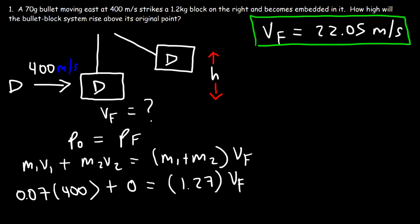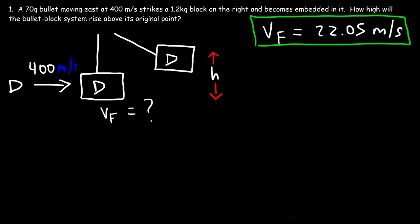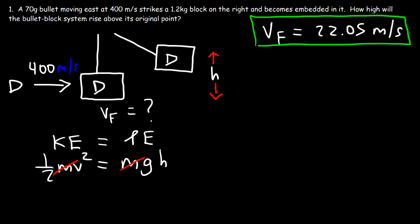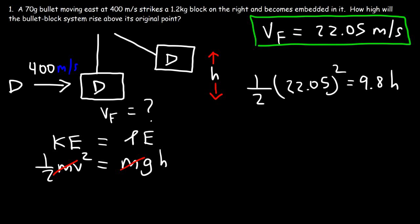Now that we have the final speed, let's use conservation of energy to determine the maximum height of the bullet-block system. Initially after the collision the object has kinetic energy, and as it rises to maximum height all kinetic energy converts to potential energy. Kinetic energy is one-half mv squared and potential energy is mgh. The mass cancels from both sides, so one-half times 22.05 squared equals gh. That gives 22.05 squared times 0.5 divided by 9.8, which yields a maximum height of 24.8 meters.